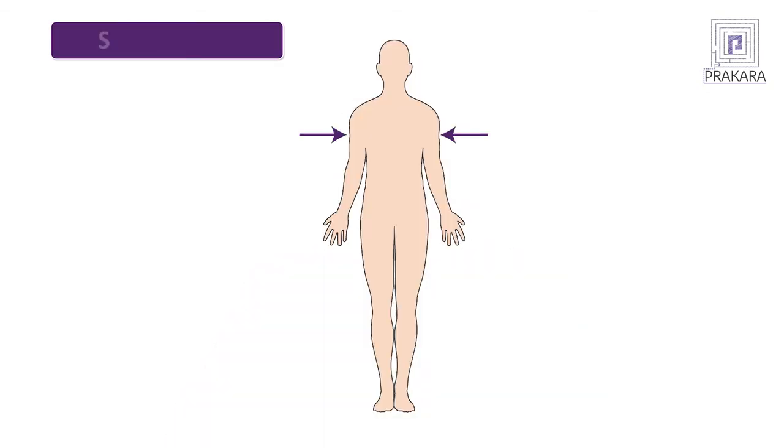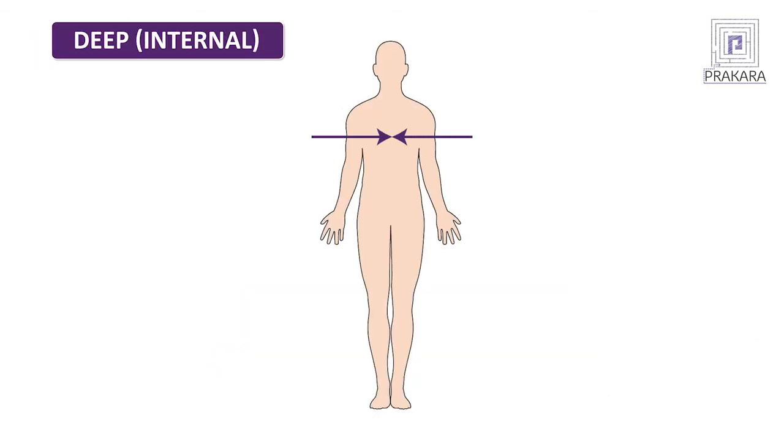The next two directional terms are superficial or external, and deep or internal. Superficial means when that part of the body lies outside another part of the body. For example, the skin lies superficial to the muscles and the bones. Deep means when a part of the body lies inside or further away from the surface compared to another organ. For example, the heart and the lungs lie deep inside the thoracic cavity.